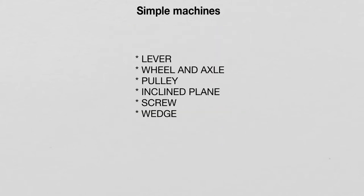There are six types of simple machines: the lever, wheel and axle, the pulley, inclined plane, the screw, and the wedge. In this lecture, I will discuss the first four simple machines in this list.